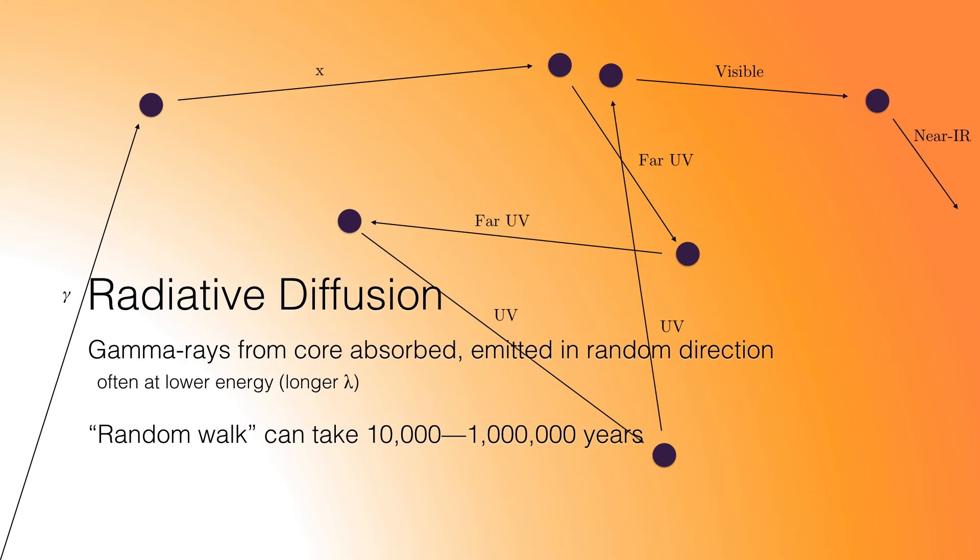However, those gamma rays will quickly encounter an atom somewhere in the radiative zone of the sun. That atom's electron will absorb that gamma ray, and the electron will eventually release a photon when it returns to its original energy state. But that photon may emerge as an X-ray with a little bit less energy, then gets reabsorbed and re-emitted again, perhaps as a far ultraviolet photon. After being reabsorbed and re-emitted a few times, it may emerge in a random direction as an ultraviolet or visible photon. This is a process called radiative diffusion.